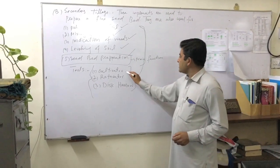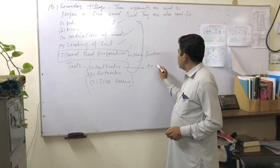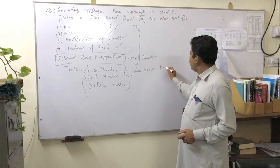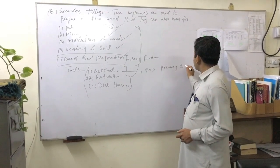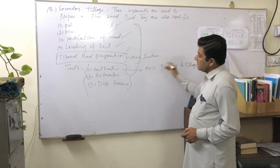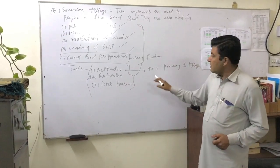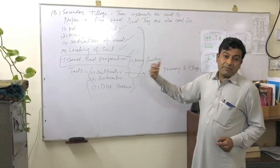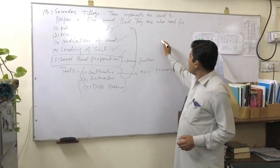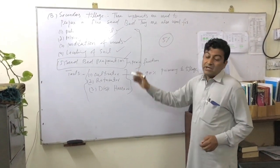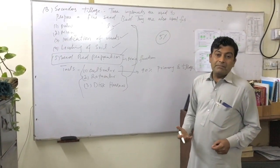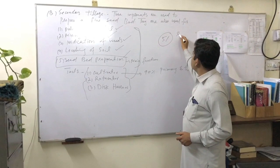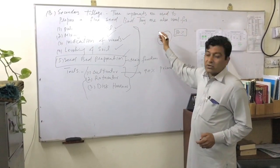If we look at Pakistan, we have ninety percent of farmers who use both primary and secondary tillage. However, there are those five percent of farmers who are not doing primary tillage.